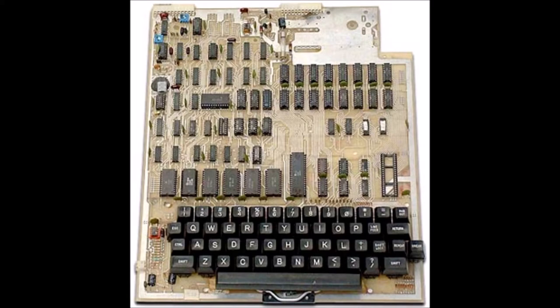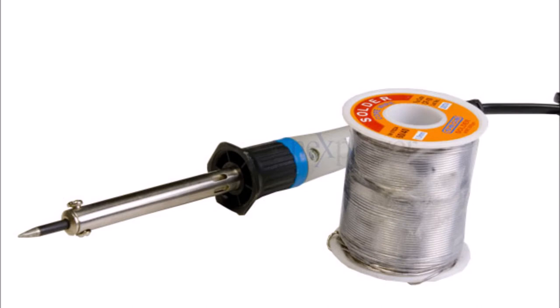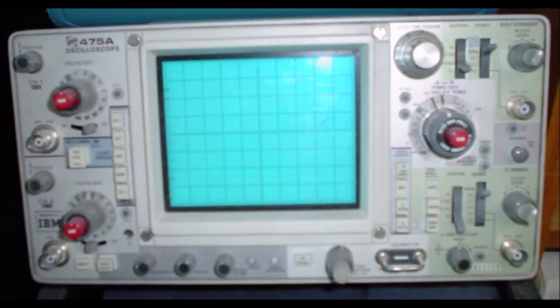To overclock this system was quite simple. All you needed was a 2 megahertz replacement crystal, a soldering iron and some solder, an oscilloscope if you wanted to monitor the actual clocks, and it was a simple matter of unsoldering the 1 megahertz crystal and replacing it with the 2 megahertz crystal and soldering it onto the board.